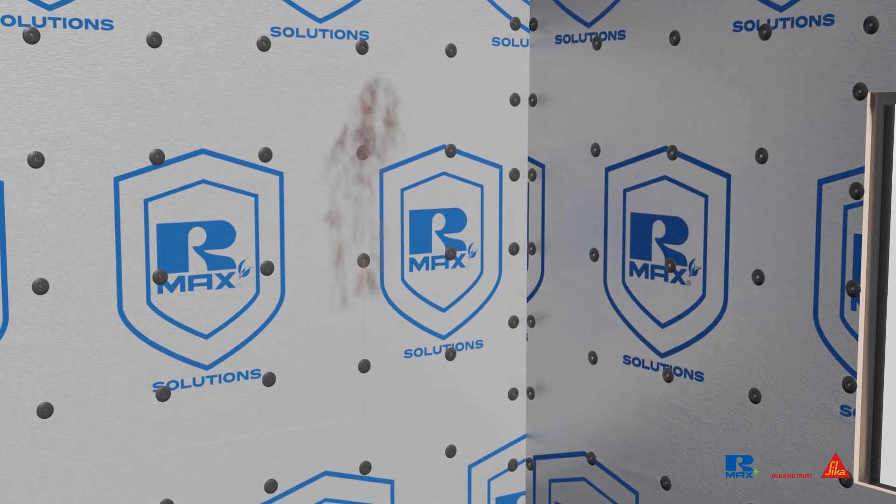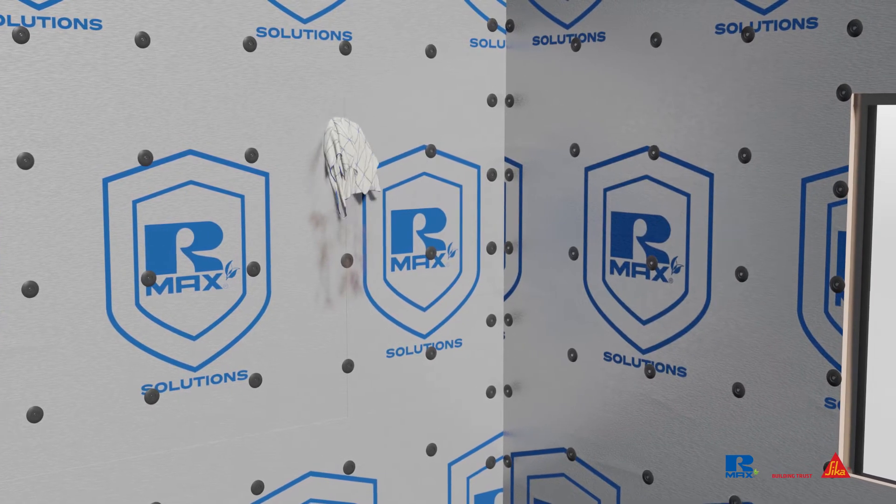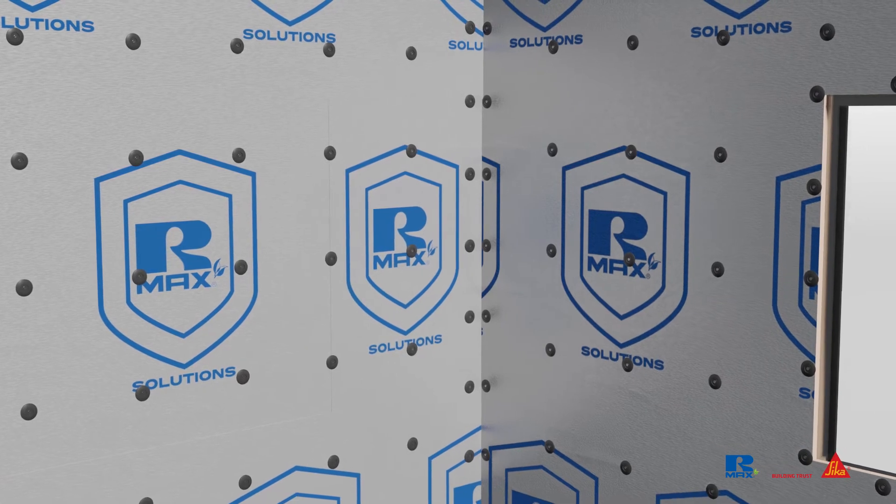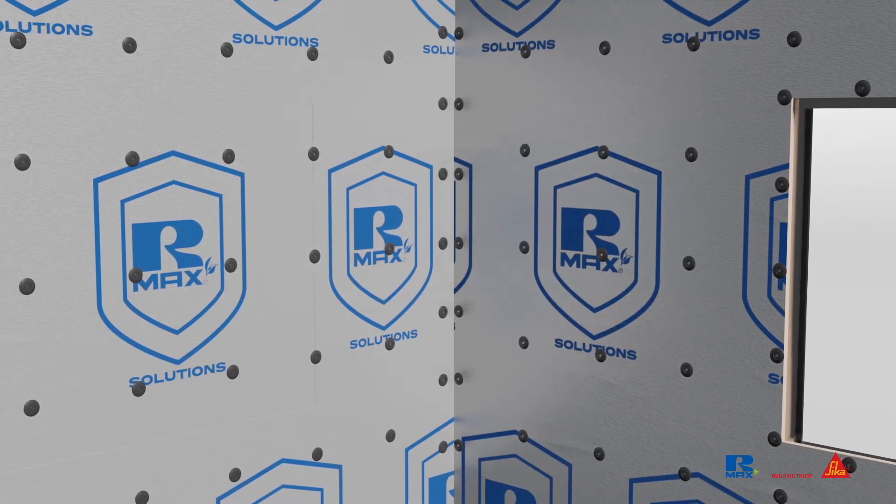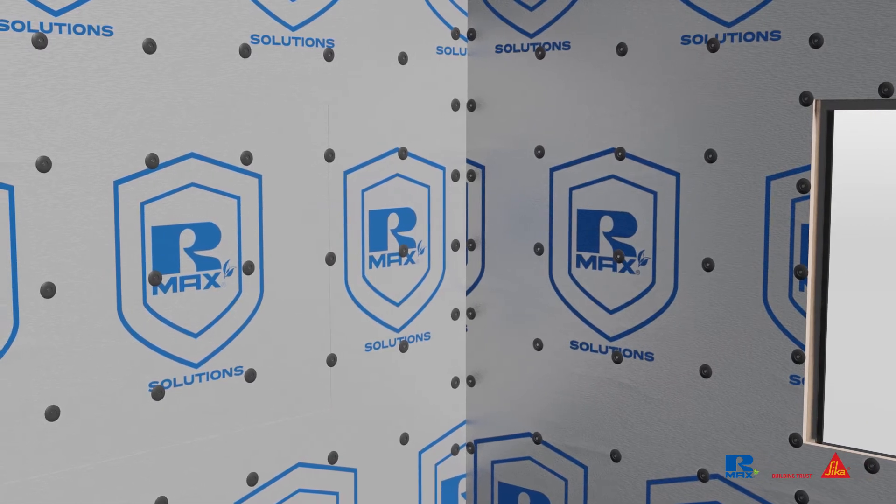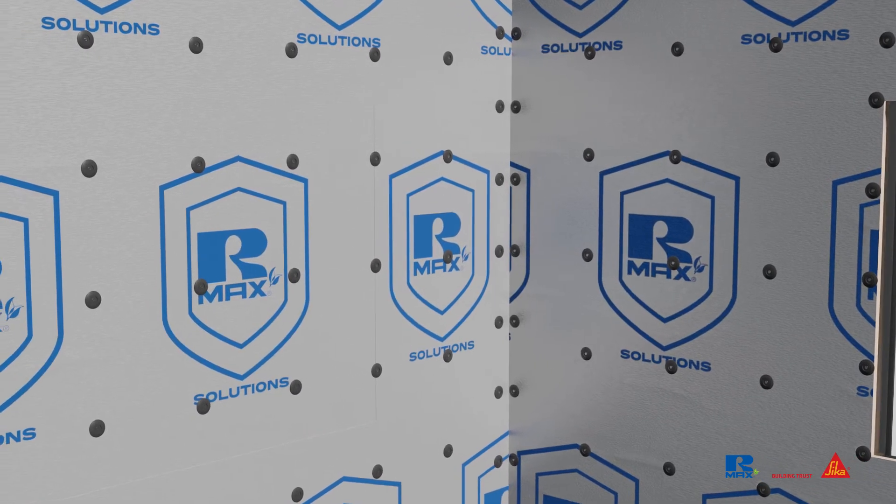Once the boards are secured, use a clean rag to quickly wipe off any dust at and around the washer where the 2000LF will be applied. This is also a good opportunity to remove any stray pieces of aluminum facer that might have been created by cutting the board.